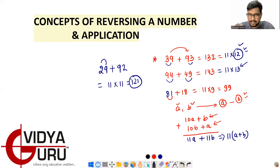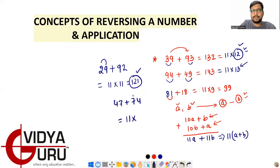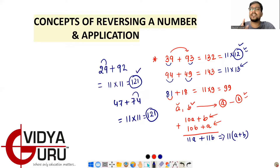This concept is very useful in simplification questions where five to six numbers are given and you need to find the addition or subtraction. For example, 47 + 74 = 11 × (7 + 4) = 11 × 11 = 121. Remember, the result will always be in the table of 11. This is the first concept — the addition concept.